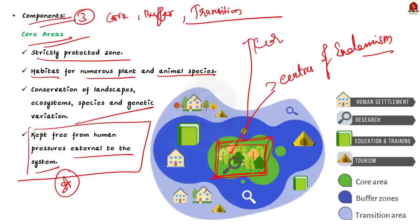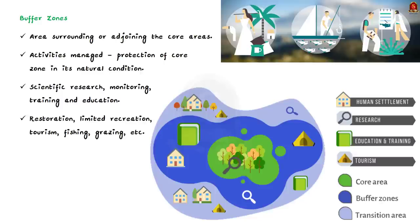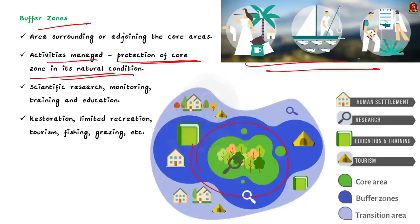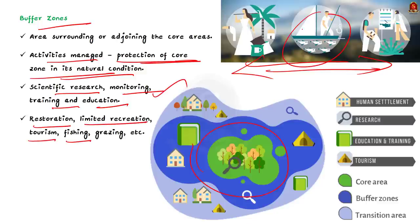The buffer zones are areas that surround or adjoin the core areas. Activities managed here help protect the core zone in its natural condition. Compatible activities with sound ecological practices that reinforce scientific research, monitoring, training, and education are done. Such activities include restoration, limited recreation, tourism, fishing, grazing, etc.